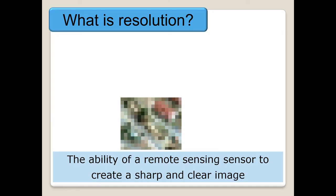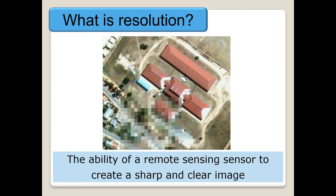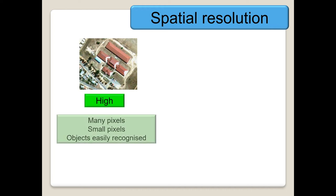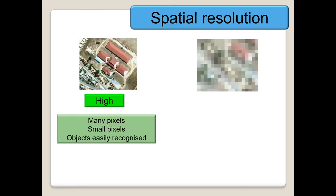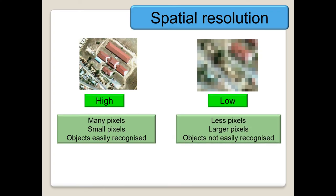What is resolution? Resolution refers to the ability of a remote sensing sensor to create a sharp and clear image. If your spatial resolution is high, you will have many small pixels and objects can be easily recognized. If your resolution is low, you will have fewer, larger pixels and we will struggle to recognize objects.